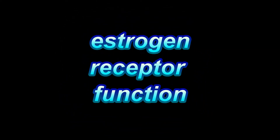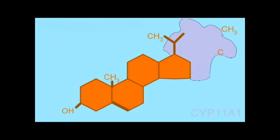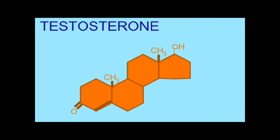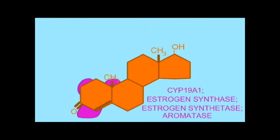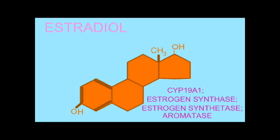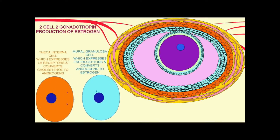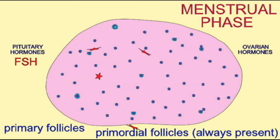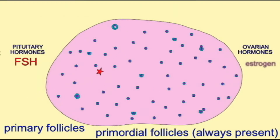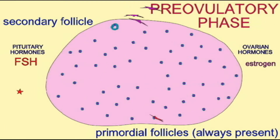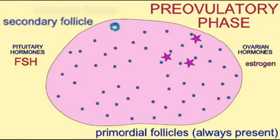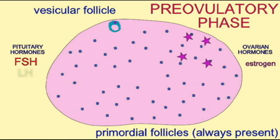The hormone estrogen is not only essential for the functioning of the reproductive system, but also for the cardiovascular system, the skeletal system, the nervous system, and the immune system. And like all hormones, it will only affect certain cells, known as target cells, which express the appropriate receptor — the estrogen receptor.